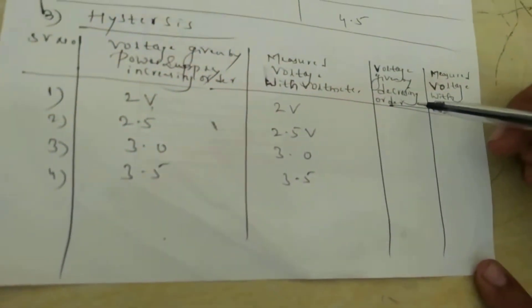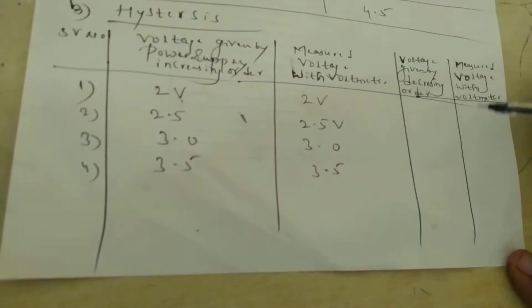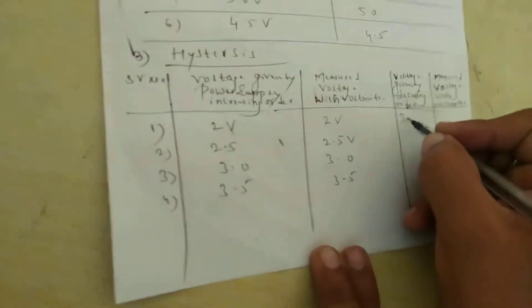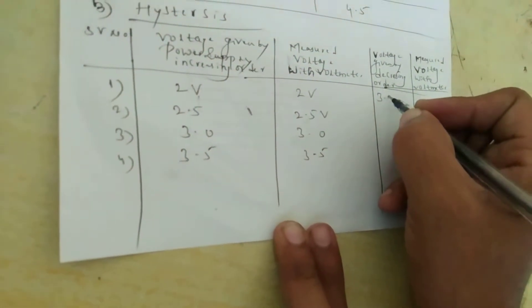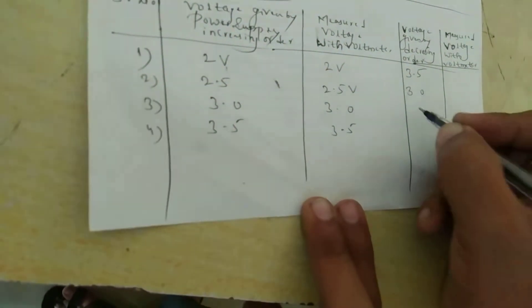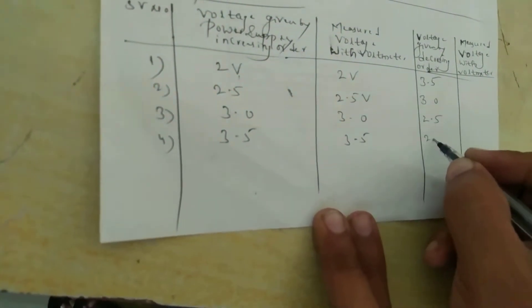Next, we will move on to the next table: voltage given in decreasing order — that is the third table. We will decrease starting from the first value of 3.5, then 3.0, 2.5, then 2.0. Since you are already at 3.5, write it directly as 3.5.